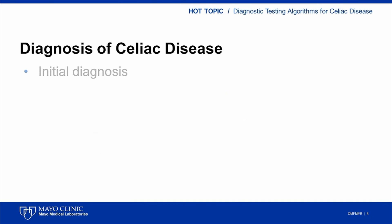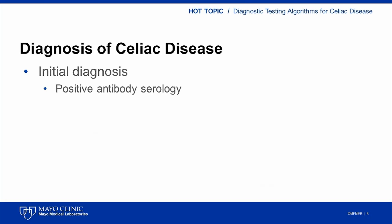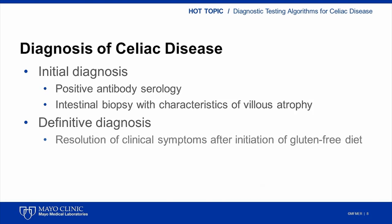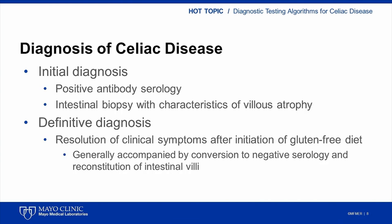An initial diagnosis of celiac disease can be established if a patient has positive serology and an intestinal biopsy that demonstrates villus atrophy. Once this initial diagnosis has been established, the patient will be started on a gluten-free diet to remove the environmental trigger for the inflammatory response. A definitive diagnosis can be established after gluten has been successfully abolished from the diet, with resolution of clinical symptoms, conversion to negative serology, and reconstitution of the intestinal villi.